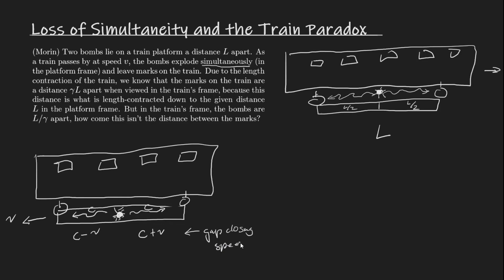This might take some thought, but it's actually straightforward if you're new to special relativity. So we've shown that by defining simultaneity with light hitting the bombs, in the train's frame these bombs don't explode simultaneously. This is exactly the loss of simultaneity. Even though the bombs are L over gamma apart in this frame, the marks aren't L over gamma apart — because one bomb explodes, then the other continues moving backward before exploding, making the distance between marks longer.